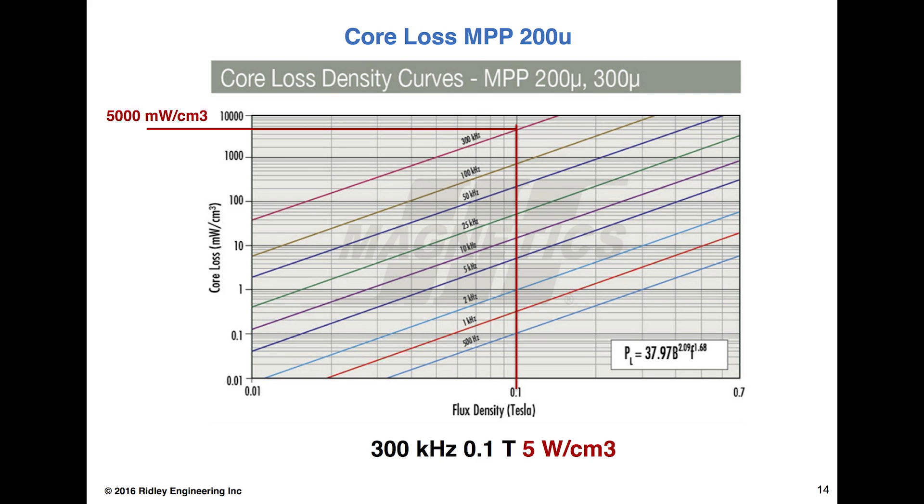What about core loss? These are core loss density curves for MPP cores, either with 200 perm or 300 perm, which means a different amount of gapping in the material. If you look along the x-axis here, on the far left is 0.01 Tesla. That's where that red line is drawn, and that would be fairly high excitation of this kind of core.